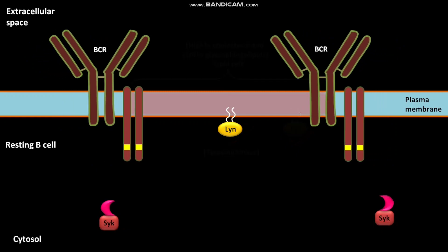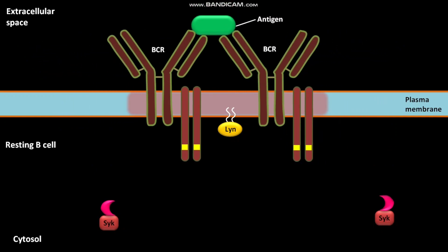Antigen binding induces BCRs to oligomerize. Also due to this antigen binding, the affinity of BCRs for the lipid raft increases. Movement of BCRs into the lipid raft brings BCRs into contact with LYN. The protein LYN then phosphorylates Ig-alpha and Ig-beta on their tyrosine amino acids.